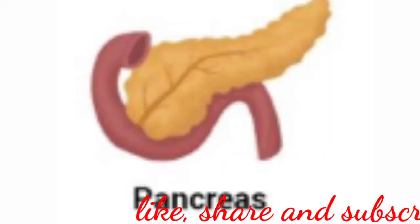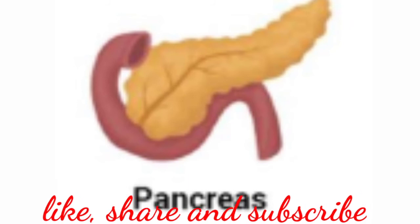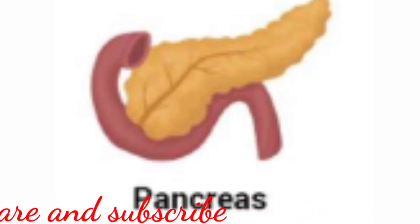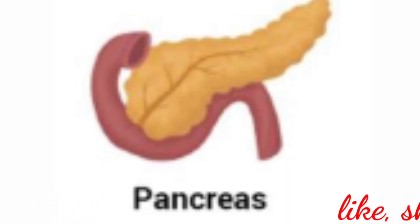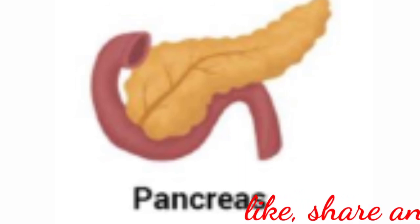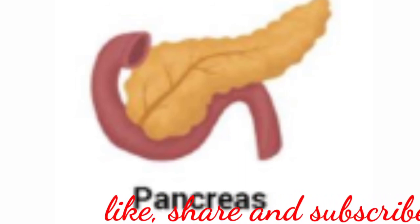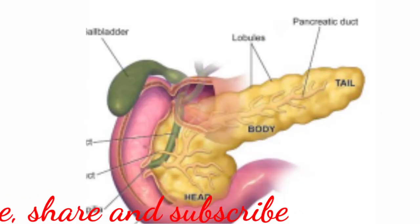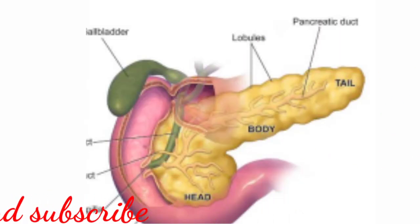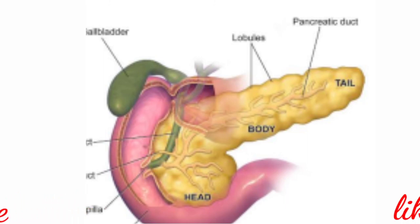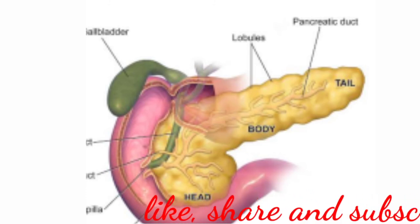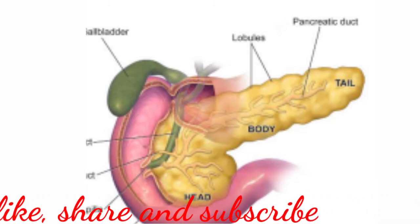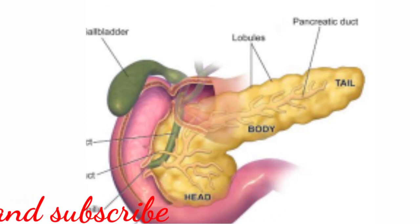Pancreas: the second largest gland in the digestive system is the pancreas, a yellow-colored compound elongated organ consisting of exocrine and endocrine cells, situated between the limbs of the U-shaped duodenum. The exocrine portion secretes pancreatic juice containing enzymes such as pancreatic amylase, trypsin, and pancreatic lipase. The endocrine part, called the islets of Langerhans, secretes hormones such as insulin and glucagon. The pancreatic duct opens directly into the duodenum.